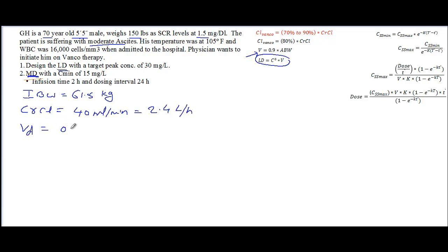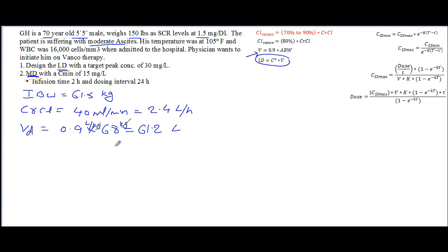VD is equal to 0.9 times the actual body weight, which is 68 kilograms. So if you calculate this: 0.9 liters per kilogram times 68 kilograms — kilograms cancel — giving us 61.2 liters. So VD equals 61.2 liters.